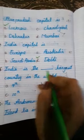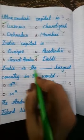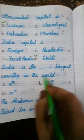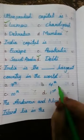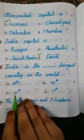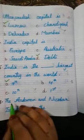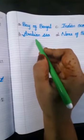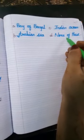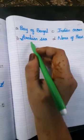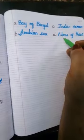India is the dash largest country in the world — seventh, tenth, fourth, or first. The answer is seventh. The Andaman and Nicobar Island lies in — Bay of Bengal, Arabian Sea, Indian Ocean, or none of these. The correct answer is Bay of Bengal.